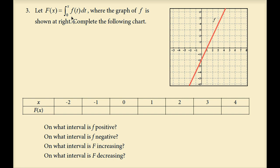Let uppercase F of x equal the integral from 0 to x of lowercase f of t dt, where the graph of f is shown at right. Complete the following chart. Notice the slope function is not constant in this example — the slopes vary. This means uppercase F of x is not a line but a curve; therefore we won't be able to determine a simple algebraic rule for uppercase F of x as we did in the previous two examples.